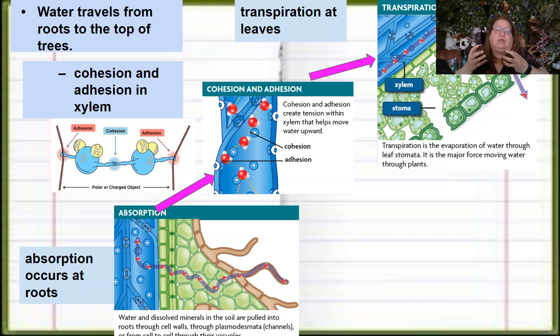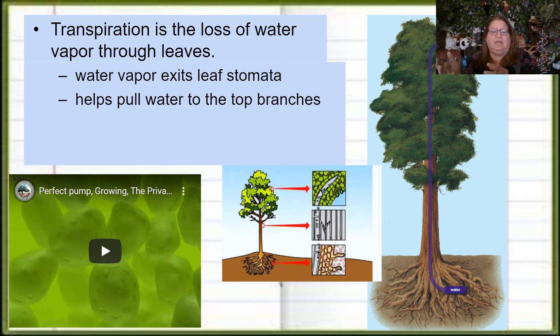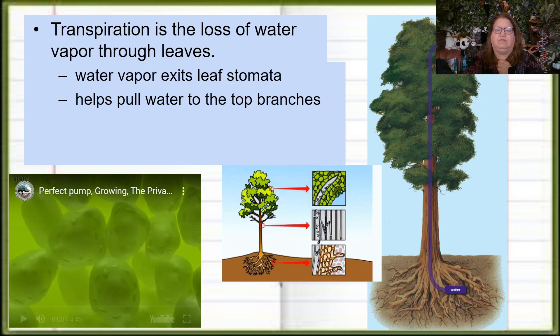That's then pulling the water molecules up. What we end up seeing is that water is evaporating at the leaves, pulling the water up through that column. Trees can lose a lot of water this way. You're going to watch a little video by David Attenborough to help you see that.